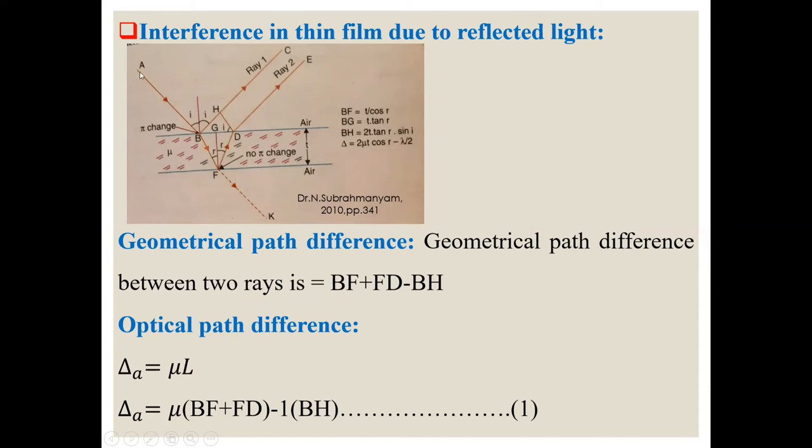And a beam of incident monochromatic wave of light. At this point, it is reflected along BF. At this point, it is refracted along BC. At this point, again, it is refracted into this air along FK. At this point, it is reflected inside the plate. And at this point, it is again reflected along this ray.